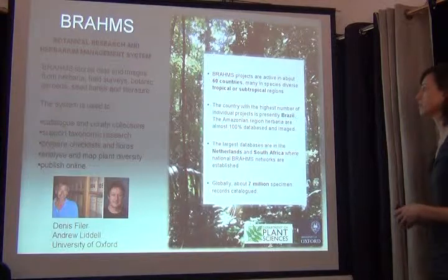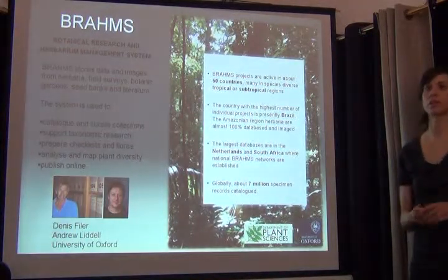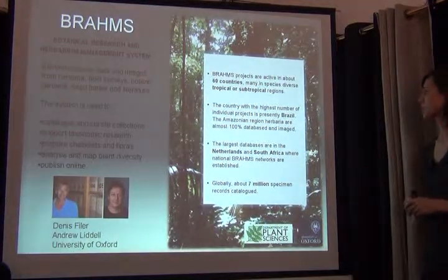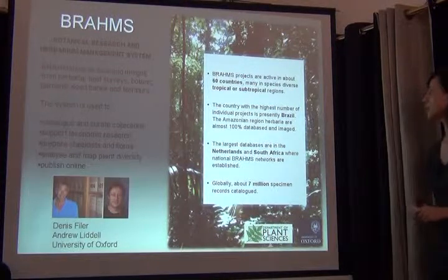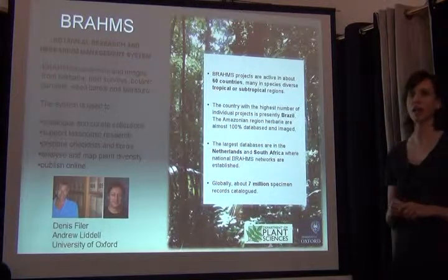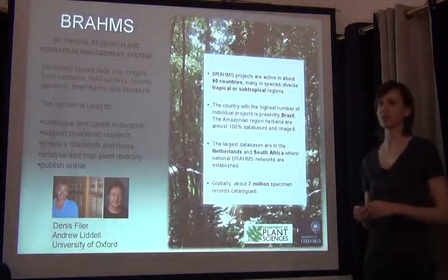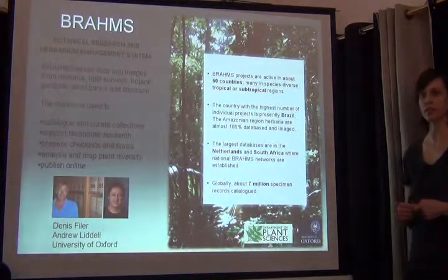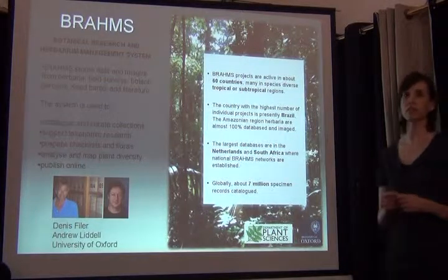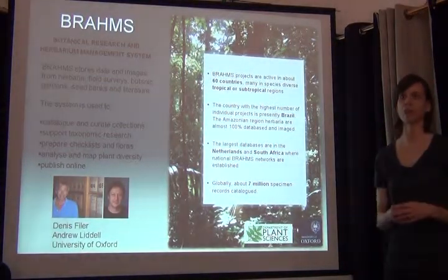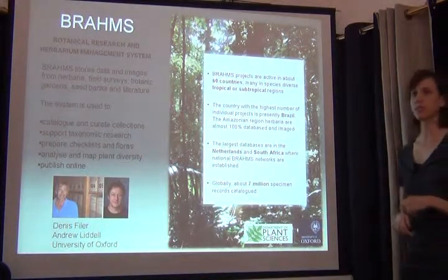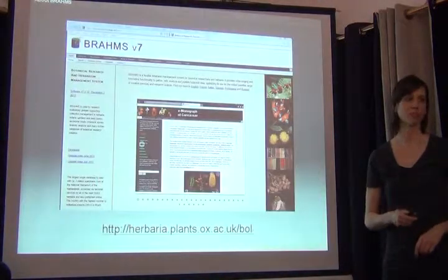Brahms is pretty widely used now in about 60 countries around the world, especially in tropical and subtropical regions. Brazil has the highest number of projects, with the Amazonian region using Brahms to database 100% of their collections. The largest database using Brahms is Naturalis in the Netherlands, and more recently South Africa came online — the whole SANBI group has adopted Brahms for their botanical collections. Globally, seven million specimens around the world are stored in a Brahms database.